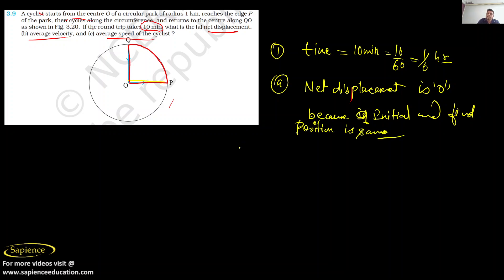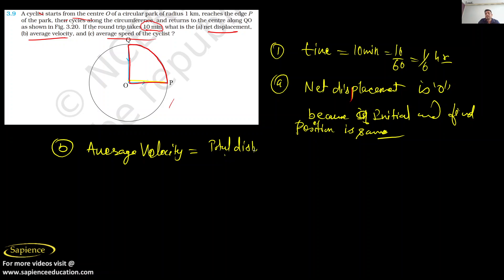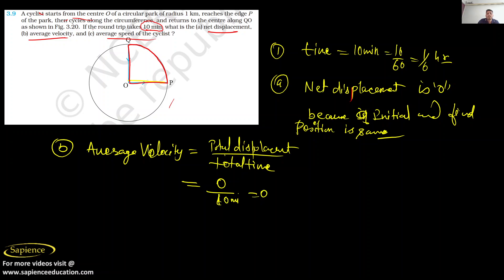Part (b): Average velocity. Average velocity is equal to total displacement divided by total time. Here, total displacement is zero, divided by time of 10 minutes. So average velocity will be zero.